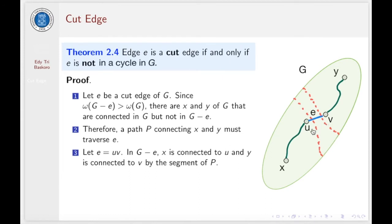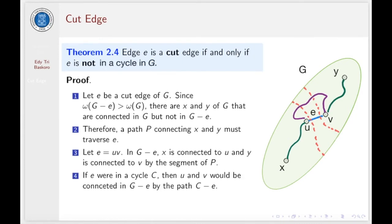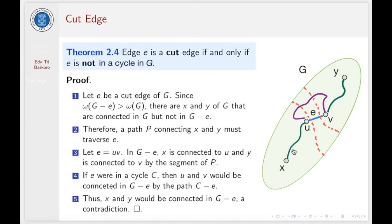One component contains X and the other contains Y, and X and Y are connected in G but not connected after we remove edge E. Therefore, a path P connecting X and Y must traverse E in G. Let E connect U and V in G. In the graph G minus E, X is connected to U and Y is connected to V by using segments of P. If E were in a cycle C, then U and V would be connected in G minus E by this purple path. Thus X and Y would be connected in G minus E — a contradiction. So we have proved this theorem.